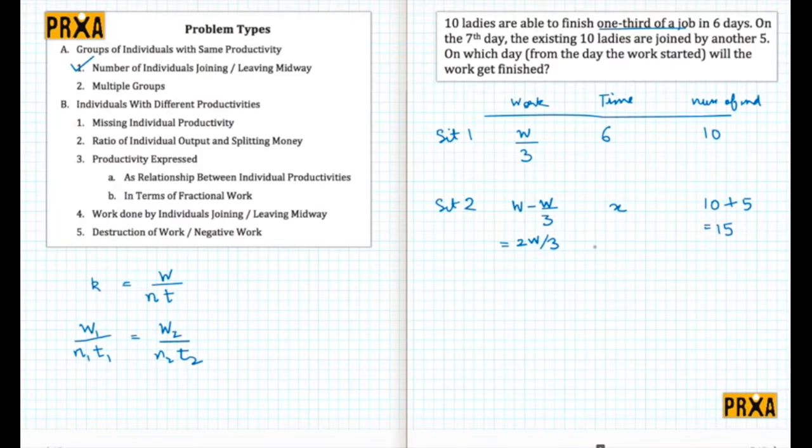Clearly we are going to use w1 upon n1 t1 equals w2 upon n2 t2. In the first situation, the work done is one third, the time taken is six days, times the number of individuals is 10. This is equal to two-third of the work that must be done in x days by 15 women. All we now need to do is solve for x.